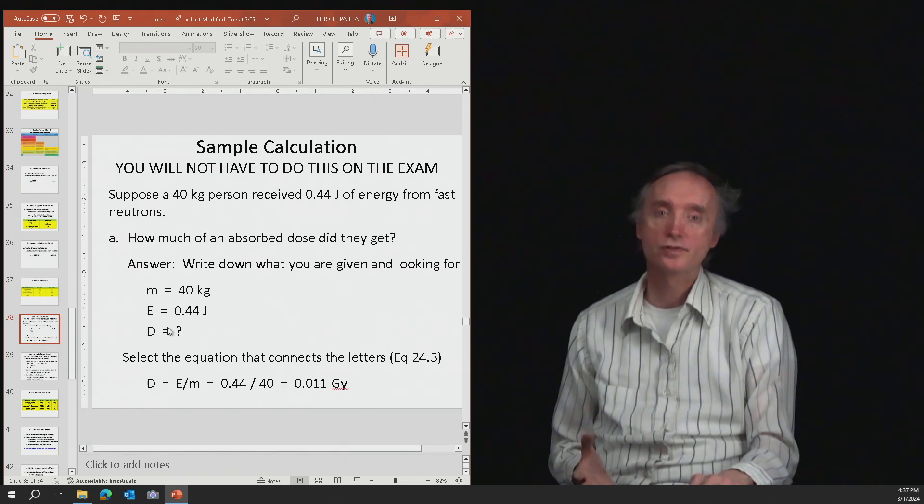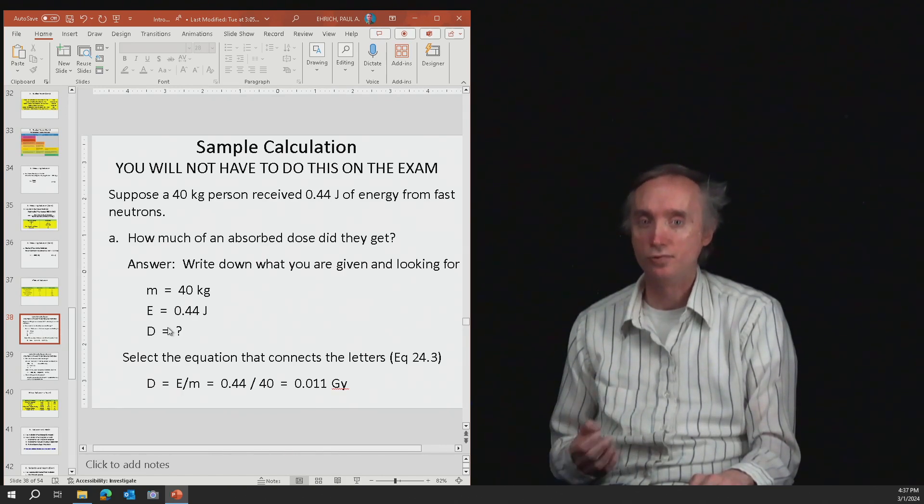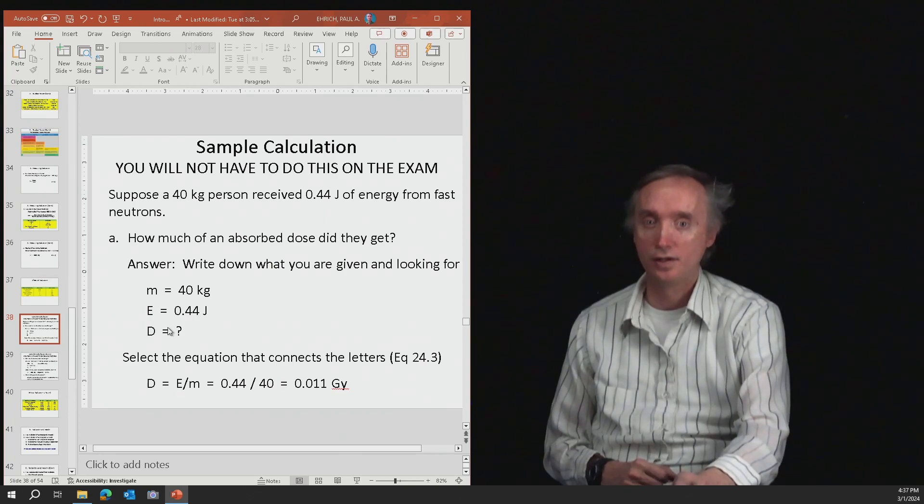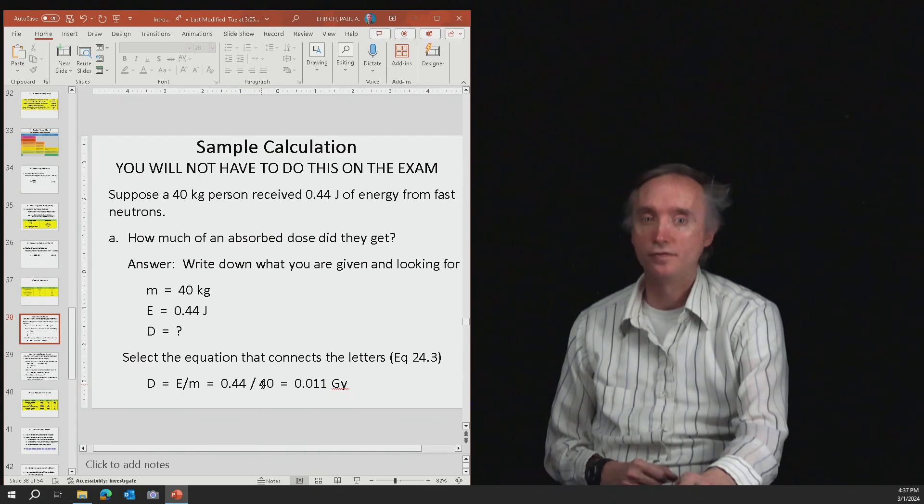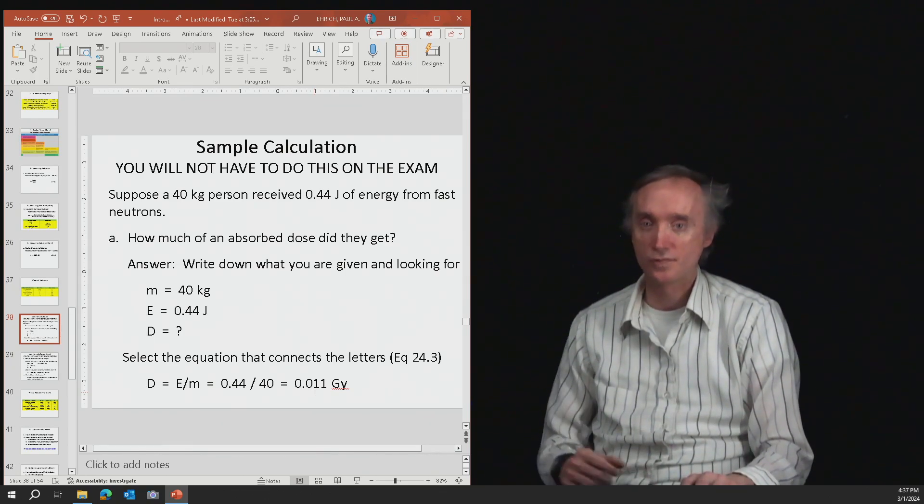So we know the mass. We know the energy. We need to find the dosage, D. So dosage is energy divided by mass, 0.44 divided by 40 is 0.011 grays of radiation. So that's part A.